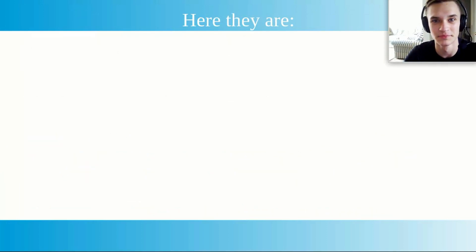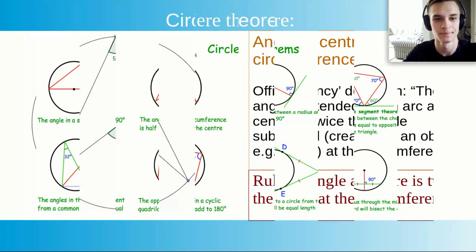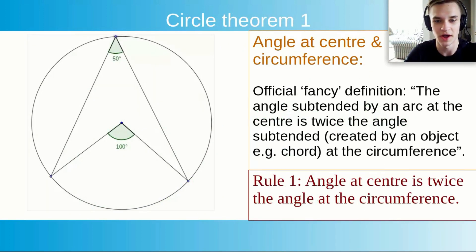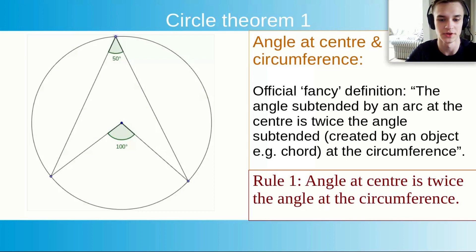Here they are — provided by Corbett Maths — and there are eight main ones we are going to look at today. The first one is angle at centre and the circumference. The official fancy definition is: the angle subtended by an arc at the centre is twice the angle subtended at the circumference. The simple definition is: angle at centre is twice the angle at the circumference. That's all you need to know.